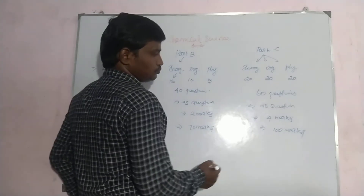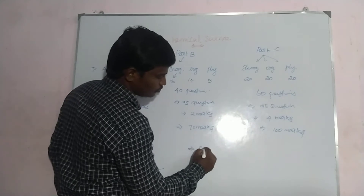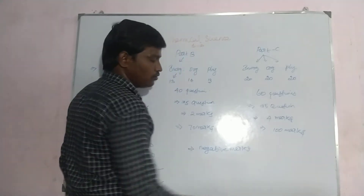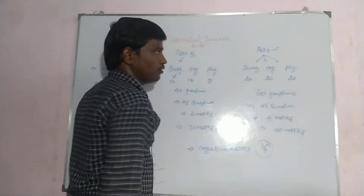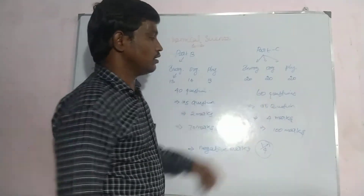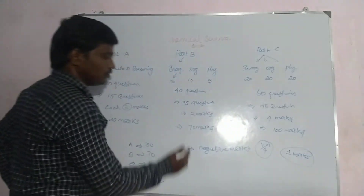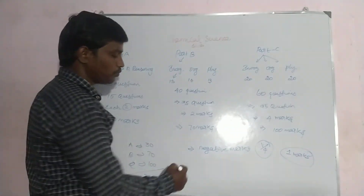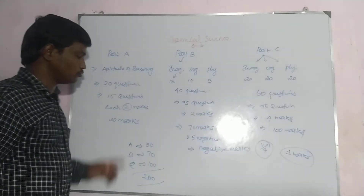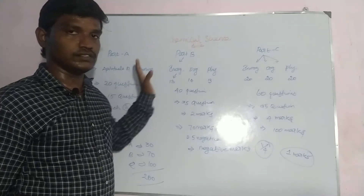They will also apply negative marks — one-fourth negative marking. This exam is based on negative marking. For Part C, if a 4-mark question is wrong, one mark is deducted. For Part B, if a 2-mark question is wrong, 0.5 marks is deducted. For Part A, if a 2-mark question is wrong, 0.5 marks is also negative.